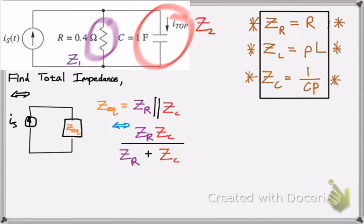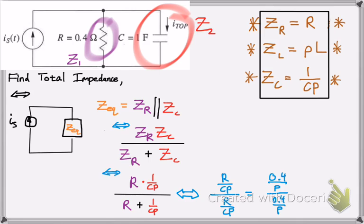So we can actually use this information and plug in the equations as follows. So ZR is just R. ZC is 1 over Cp over the sum of those, which is R plus 1 over Cp. Now, if you notice, it's very easy. When you combine or simplify, you get R over Cp over R over Cp, which is just 1. But if you plug in the numbers that we're given here, R is 0.4, P is just the derivative, so don't worry about that, but you still have to keep it there. But you notice the P's cancel anyway. And the C is 1, so it had no effect. And that means we just get the total impedance is 1.